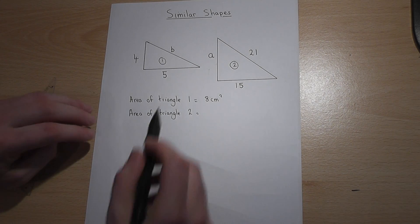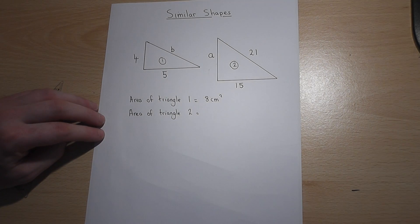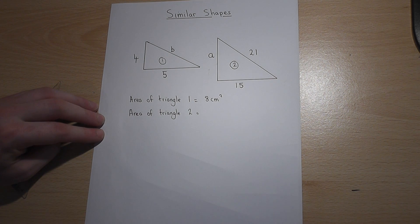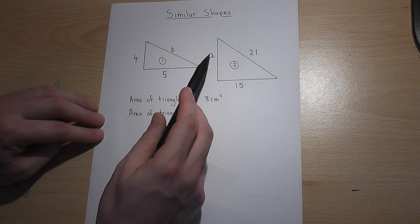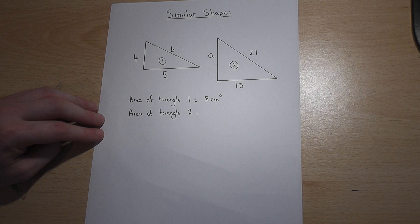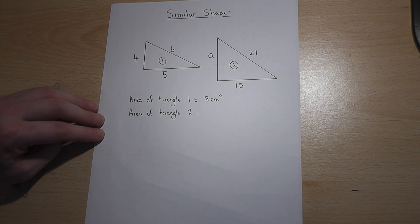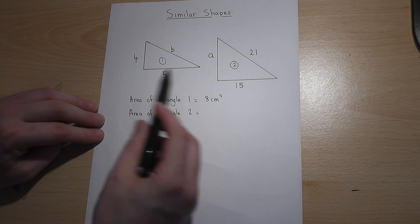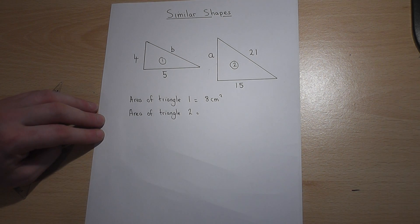Suppose you've got two shapes which you are told are similar and you want to find some missing sides on these two shapes. First of all, I must emphasize these are not drawn to scale, nor can we assume they are right-angle triangles. They're just sketches.